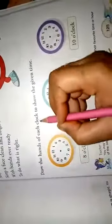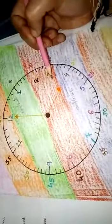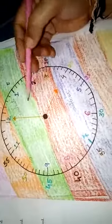So, let's start here. Draw the hand of each clock to show the given time. Here, in this, there are 4 o'clock. How many o'clock? 4 o'clock. See, the short hand